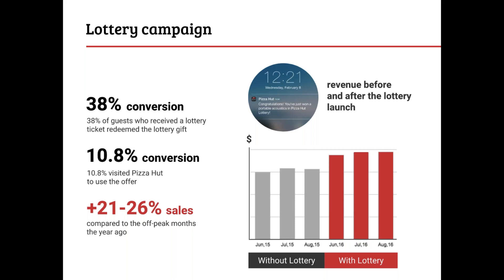Another campaign type our system offers is the lottery campaign. You can offer specific customers a product prize — in this case, a portable speaker in a Pizza Hut lottery. The conversion rate for this campaign was 38% for guests who received a lottery ticket, versus only 10% for customers who visited other locations. Overall, customers that participated in the Pizza Hut lottery campaign saw a 20 to 26% increase in sales compared to off-peak months.